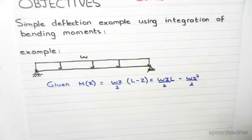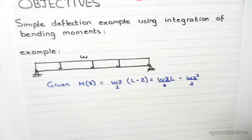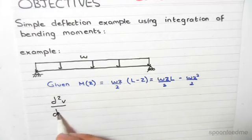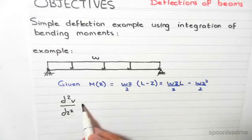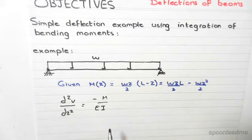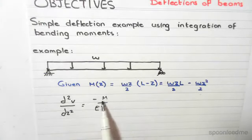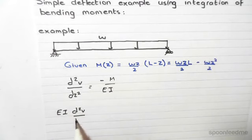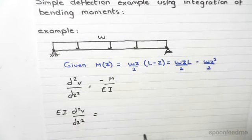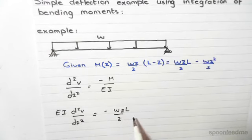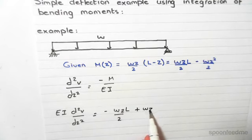Now, we start off by writing the fundamental equation of deflections. D squared little V, DZ squared equals minus M on EI. Taking EI to this side and substituting M, we get EI D squared little V, DZ squared equals minus WZL on 2 plus WZ squared on 2.